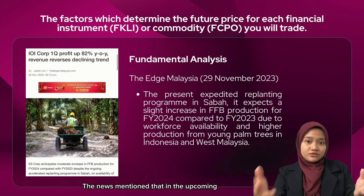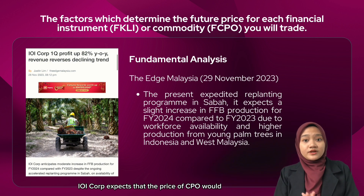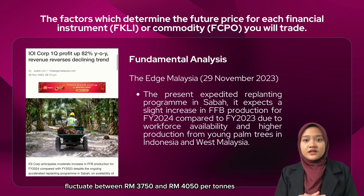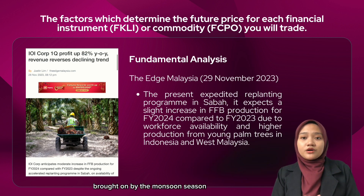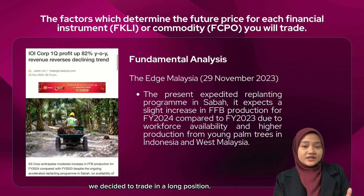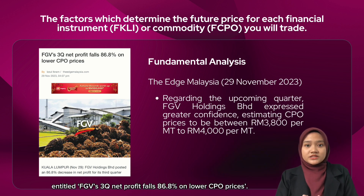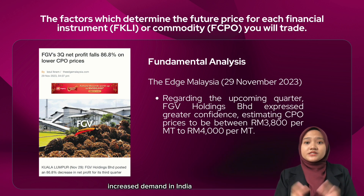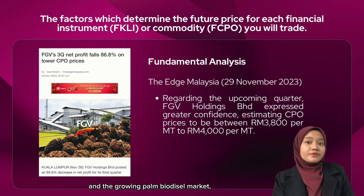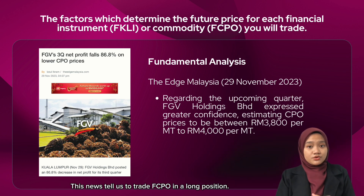The IOI Corp article mentioned that in the upcoming two months of 2024 — January and February — IOI Corporation expects the price of CPO to fluctuate between RM3,750 and RM4,050 per tonne before rising due to the possibility of production disruption brought on by the monsoon season, so we decided to trade in a long position. On the same date, The Edge Malaysia also published an article entitled 'FGB's Third Quarter Net Profit Falls 86.8% on Lower CPO Prices.' This upward trend is reinforced by the expected effects of El Niño, increased demand in India due to quarterly restocking, and growing biodiesel markets — all contributing to a strengthened pricing environment, which also led us to trade CPO in a long position.